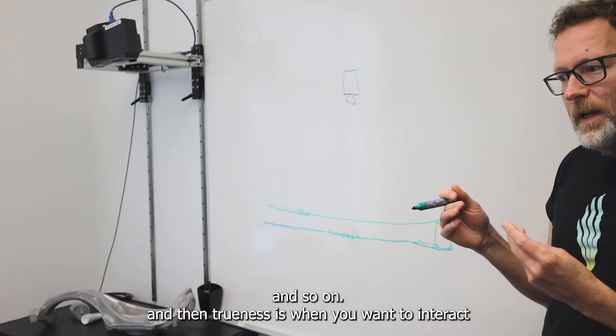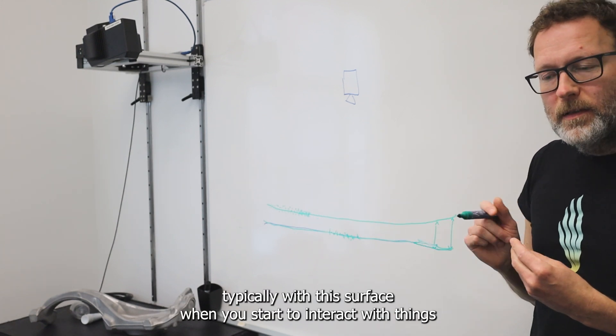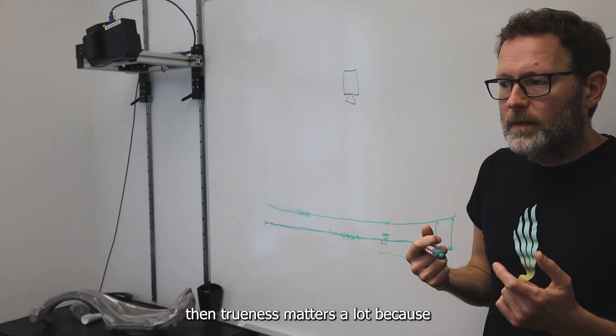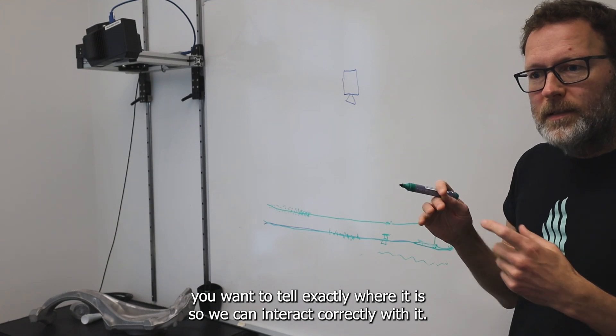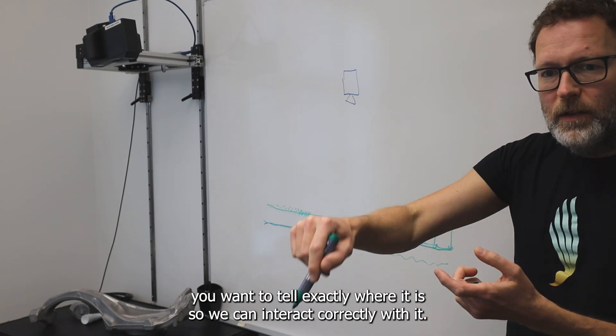And then trueness is when you want to interact typically with this surface. When you start to interact with things, then trueness matters a lot, because you want to tell exactly where it is, so you can interact correctly with it.